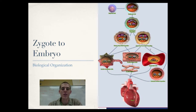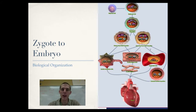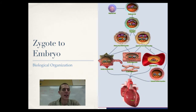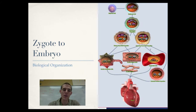Zygote to embryo — biological organization. The whole reason we are talking about cell differentiation is an interesting thing to consider. Every one of your cells in your body has the exact same set of DNA, except for eggs or sperm. All the somatic cells in your body have the exact same DNA, and yet they are all different from each other. Skin cells aren't like muscle cells or bone cells. Any one of your cells has the instructions to be any other type of cell, yet it is a skin cell or a muscle cell. That is where we get differential gene expression — different genes being expressed causing different cells to do different things.